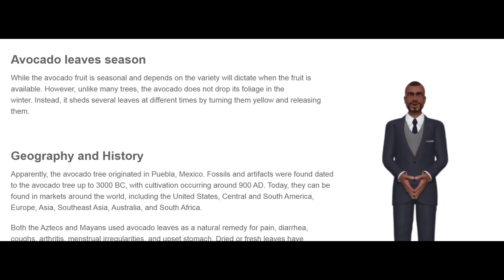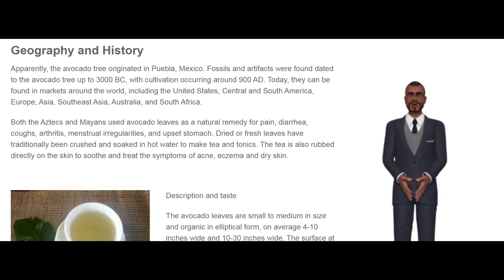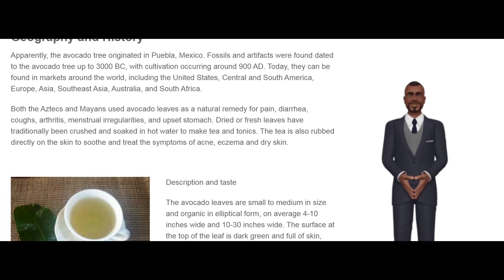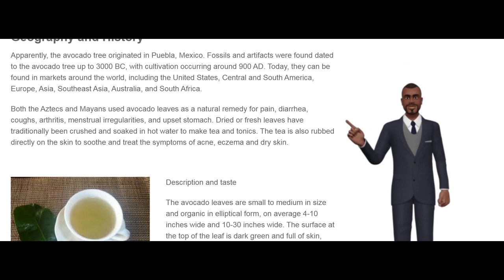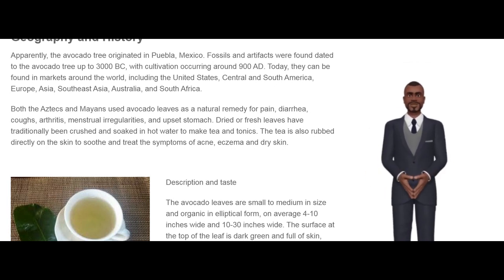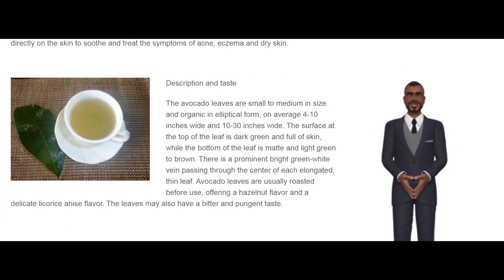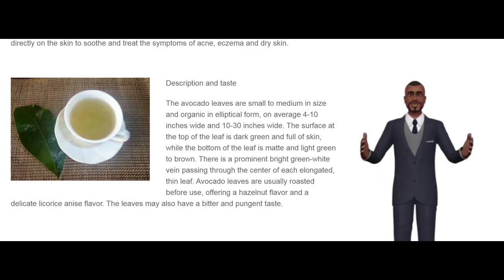Geography and History. Apparently, the avocado tree originated in Puebla, Mexico. Fossils and artifacts were found dated to the avocado tree up to 3000 BC, with cultivation occurring around 900 AD. Today, they can be found in markets around the world, including the United States, Central and South America, Europe, Asia, Southeast Asia, Australia, and South Africa.